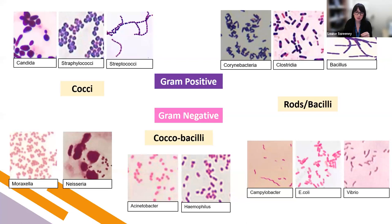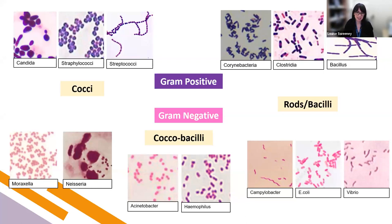With gram-negatives, you can get some really nice differences in morphology that can be very classical. Campylobacter has the appearance of a seagull — that lovely wave form. Vibrio has nice curved rods, very distinct from the usual gram-negative pathogens like E. coli or Klebsiella. There are also other morphological features such as the presence of spores — with clostridia, you can see those spores staining pink rather than purple.